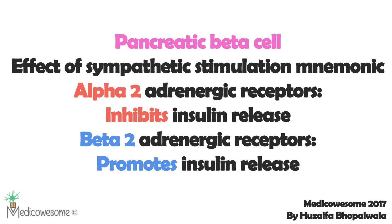Pancreatic islet beta cells in the pancreas, which secrete insulin, have both alpha-2 and beta-2 receptors. Alpha-2 says 'screw you, I'm the boss — I'm gonna inhibit insulin secretion,' while beta-2 is the good boy that increases insulin secretion.